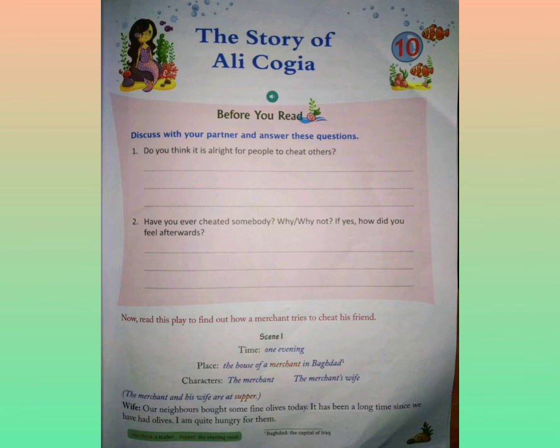Hope you understood this story. What we understand from this story is that we should follow the values of trust and honesty in our life. That's all for today. Next class we will discuss the exercises of the workbook. Till then, take care. Thank you.